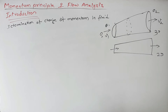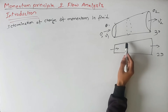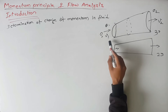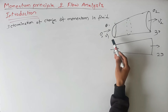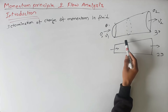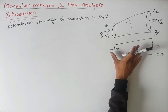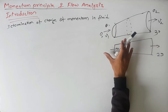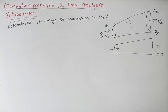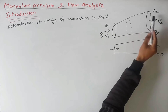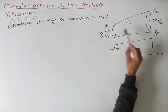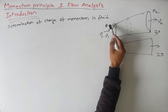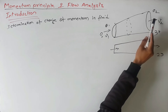Steady non-uniform flow means conditions change from point to point — parameters such as velocity, area of cross section, and pressure change — but they do not change with respect to time. So area changes from A1 to A2 and velocity changes from V1 to V2, but these conditions do not change with time.